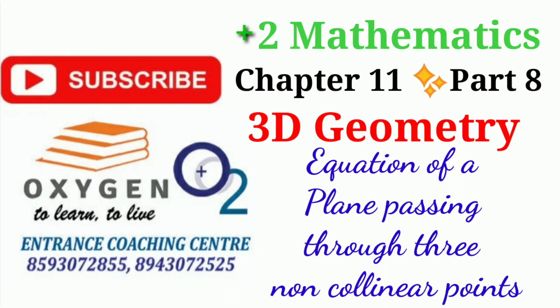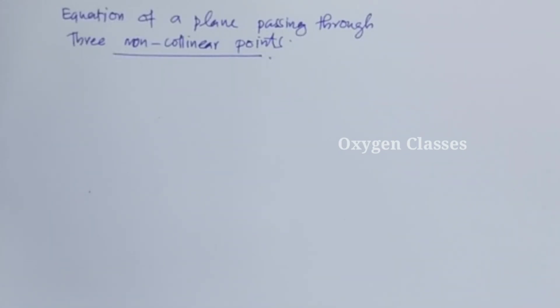Welcome to Oxygen Classes. Please subscribe to our channel for more videos. In this section we cover the equation of a plane. There are two types: the equation of a plane in normal form, and the equation of a plane passing through a point and perpendicular to a vector, which were covered in previous videos.